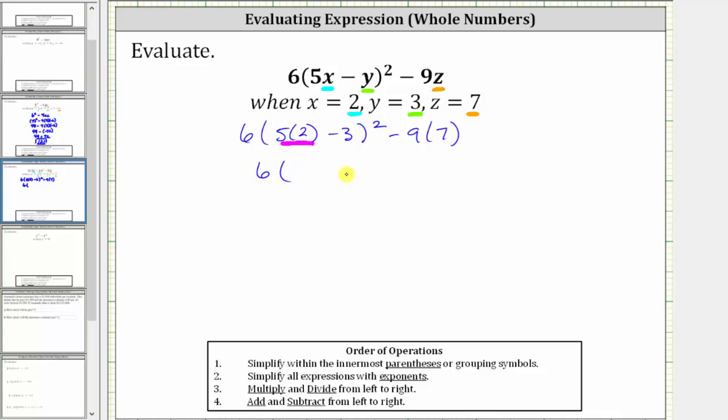Which gives us 6 times the square of the quantity 10 minus 3, minus 9 times 7. Still simplifying within the parentheses, 10 minus 3 equals 7, which gives us 6 times the square of 7, minus 9 times 7.